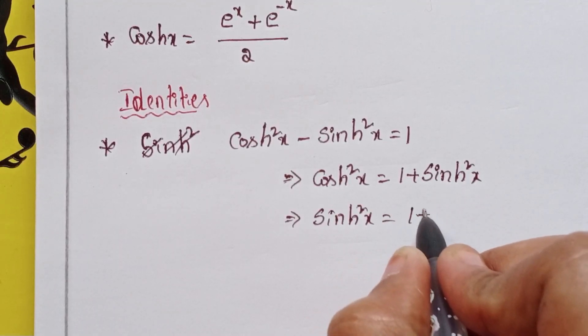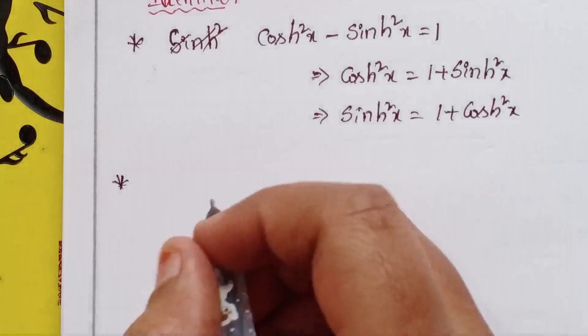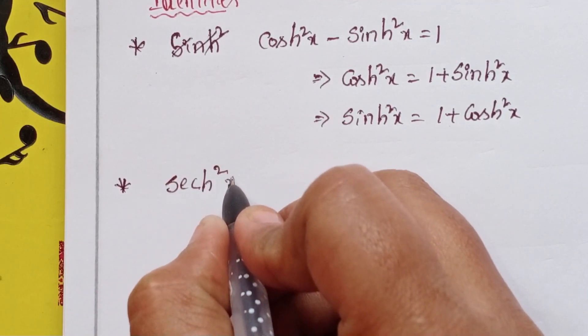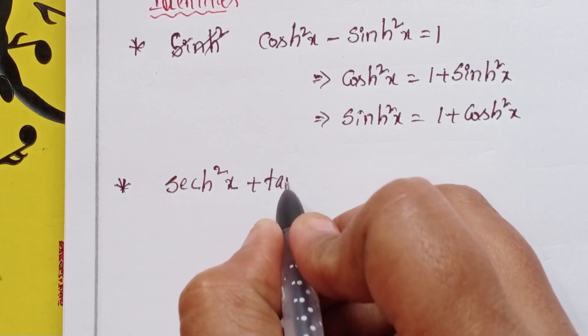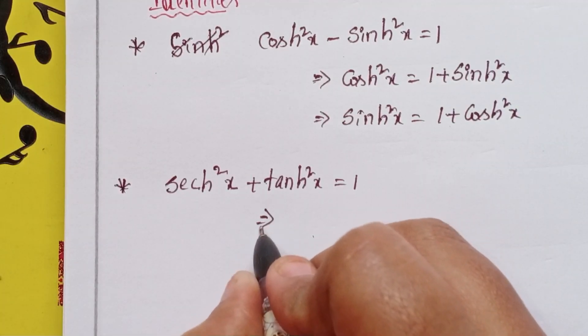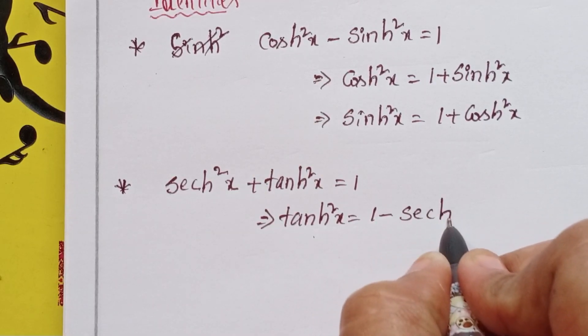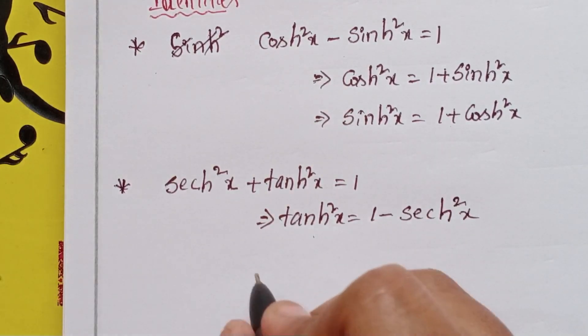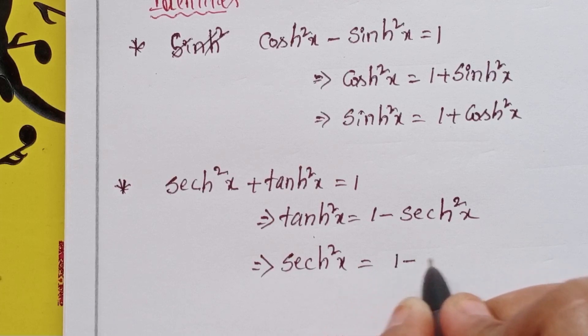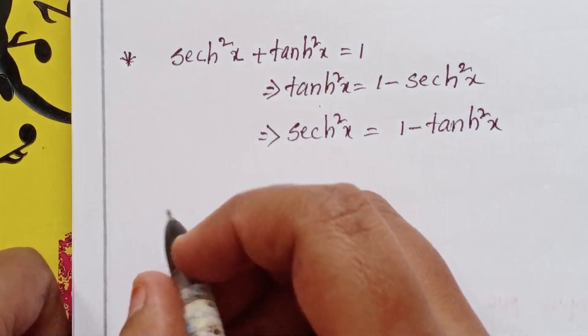Another one is secant h squared x plus tan h squared x equals 1. That implies tan h squared x equals 1 minus secant h squared x. Not minus here, equals 1 minus sinh squared x. Secant h squared x equals 1 minus tan h squared x.